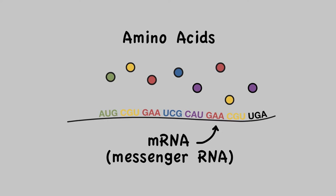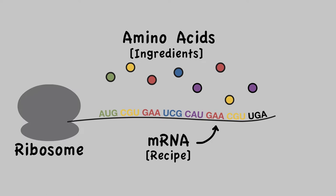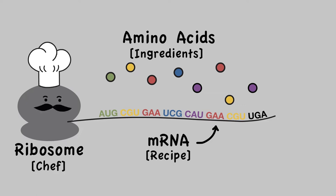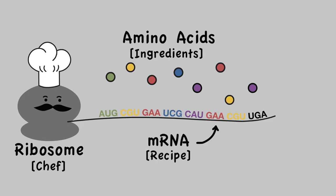So we have amino acid ingredients that get added together following an mRNA recipe. The last thing we need is a way to actually read this recipe. A molecular machine called the ribosome does that job. The ribosome reads the mRNA recipe and grabs the right amino acids. I like to think of the ribosome as a chef following an mRNA recipe that tells it which amino acid ingredients to add to make a protein.